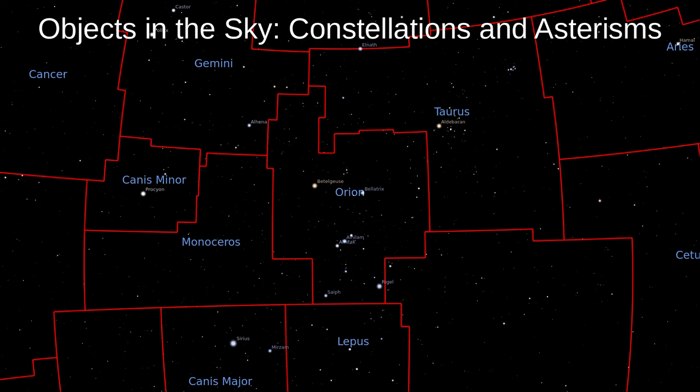Hello and welcome to Astronomy with Mr Gerin. In the first video on objects in the sky, we looked at the different objects we can see in the sky and how to identify them. Today we're going to focus on the stars and how we group them into asterisms and constellations.